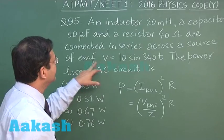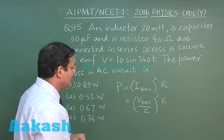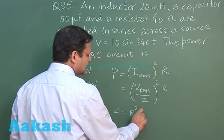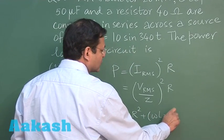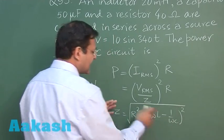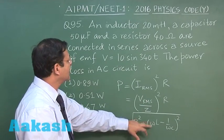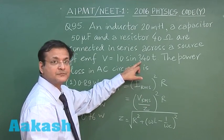The value of V rms is 10 by root 2. The value of z you have to calculate: r square plus omega l minus 1 by omega c whole square, under root. This is the expression that will be giving you the value of z.